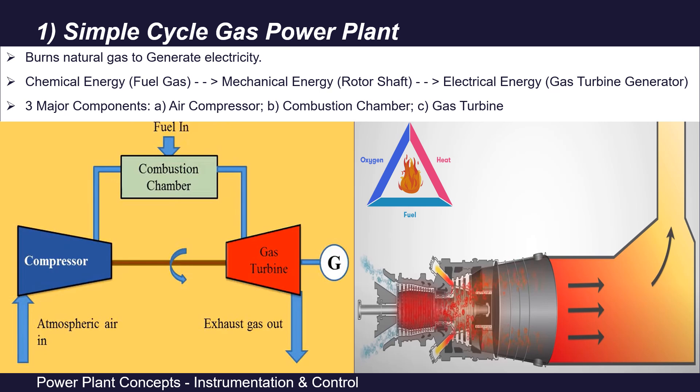Basically, in a simple cycle gas power plant (SCGP), it is a type of natural gas power plant that uses a single turbine to burn natural gas and produce electricity. In a gas turbine, the chemical energy of fuel is converted into electrical energy. The major components of a simple cycle gas power plant are an air compressor, a fuel gas combustion chamber, and then a gas turbine.